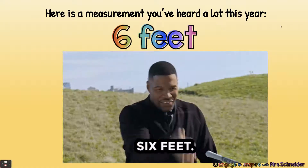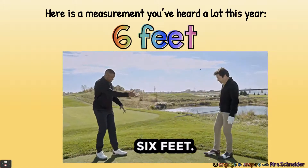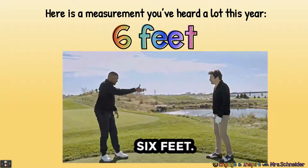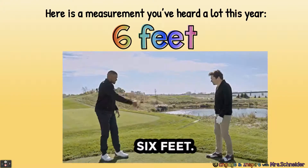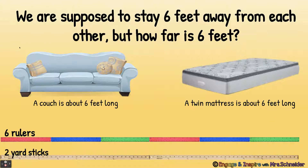Here's a measurement you've heard a lot this year: six feet. He's telling him to stay back six feet. We are supposed to stay six feet away from each other. But how far is six feet? A couch is about six feet long. A twin mattress is about six feet long. If you put six rulers down on the ground, that would be six feet. Or if you put two yardsticks down, that's six feet.